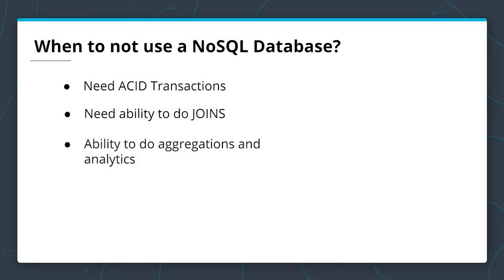Ability to do aggregations and analytics. For the same reasons just mentioned, aggregations and analytics are not meant for NoSQL databases without optimizations. A product like DataStax Enterprise adds support for this with a combination of Apache Cassandra and Apache Spark, but it doesn't come right out of the box.